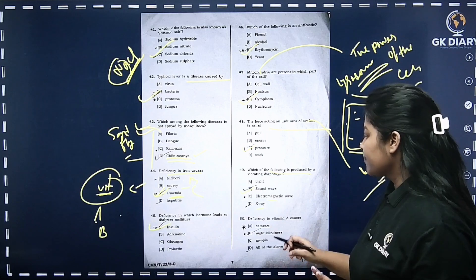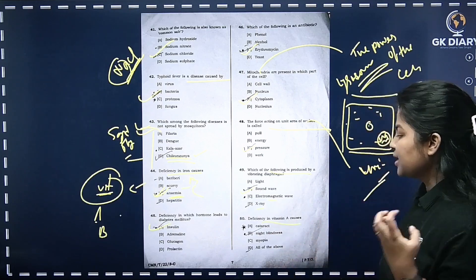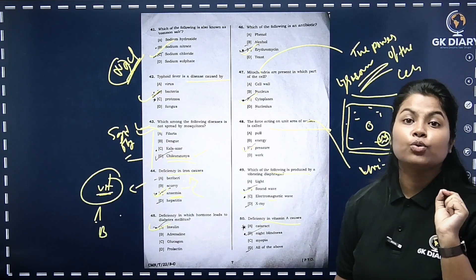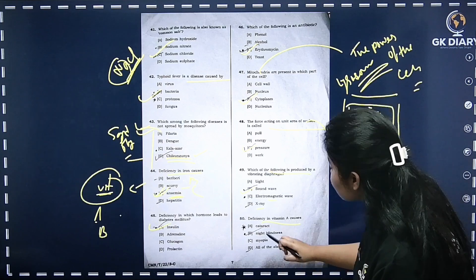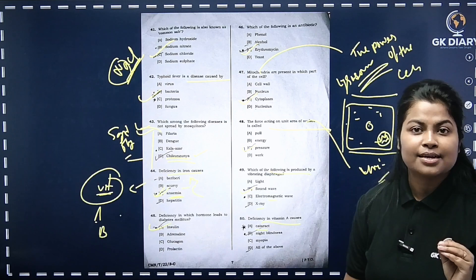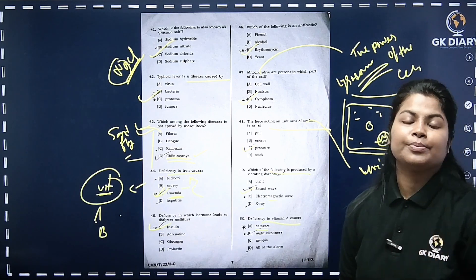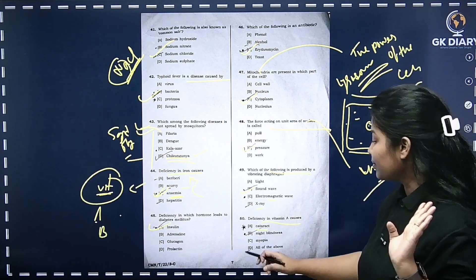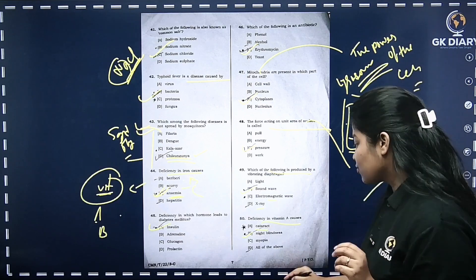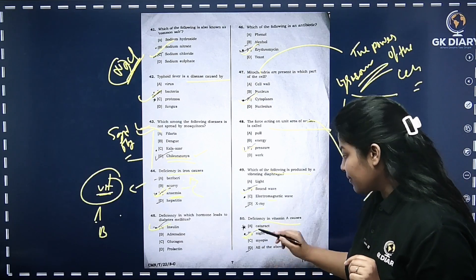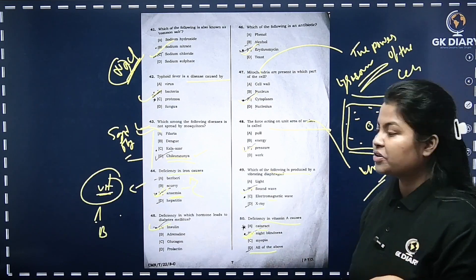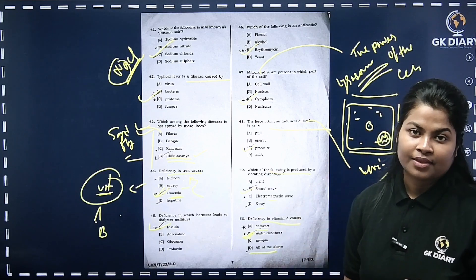Deficiency in vitamin A causes night blindness. Vitamin A is important. This is related to myopia as well. The correct option is night blindness. Vitamin A deficiency affects vision significantly and is an important topic for DHS and DME exams.